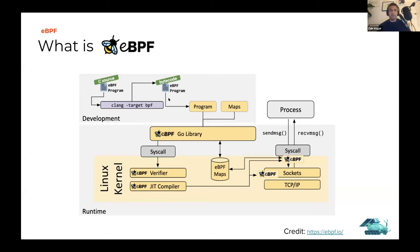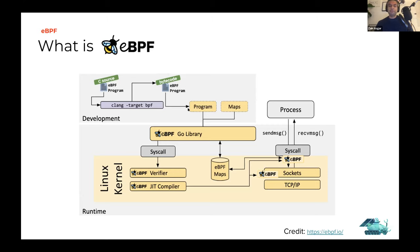The way eBPF works: you start with a C source program — really a restricted form of C, because you can't run arbitrary C code and guarantee it's safe. You run it through Clang and specify that it should target BPF. It generates bytecode, which is a BPF program. You then make a syscall, and the Linux kernel verifies that this bytecode can safely execute. If it can, it compiles it down to machine code and allows it to run inside the kernel.